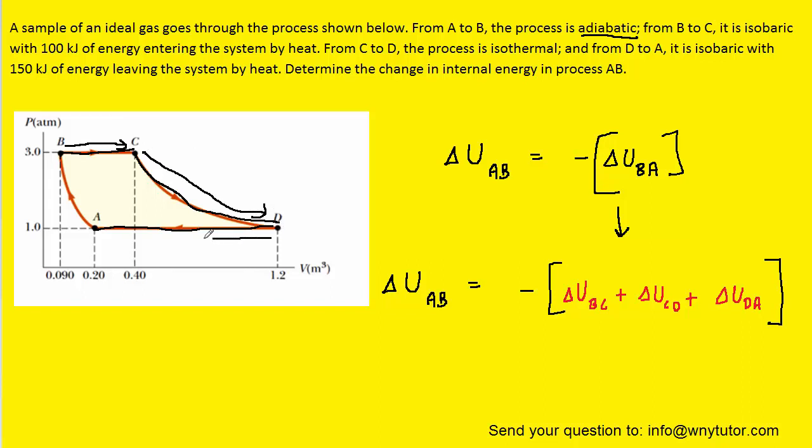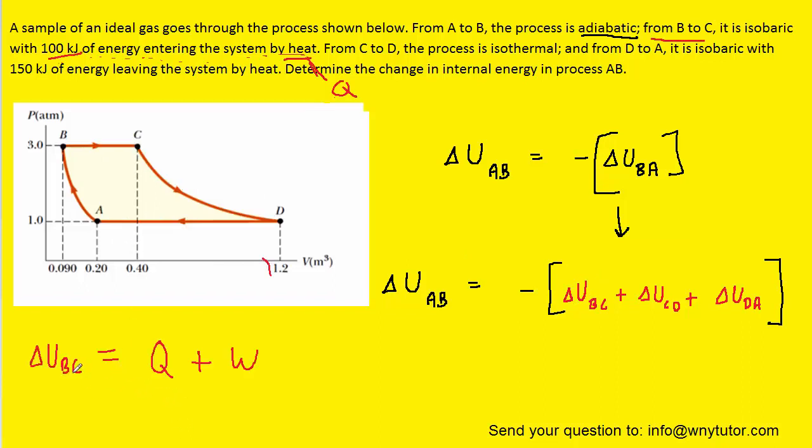Why don't we first calculate the change in internal energy of the process when moving from B to C. Now in order to calculate the change in internal energy of the process from B to C, we simply have to add the heat plus the work done. The question notes that 100 kilojoules of energy entered the system by heat, so that will turn out to be our Q. The work done when moving from B to C will simply be the area underneath the curve when moving from B to C. We can see that that area is a rectangle, and we know that the area of a rectangle is the base times the height.